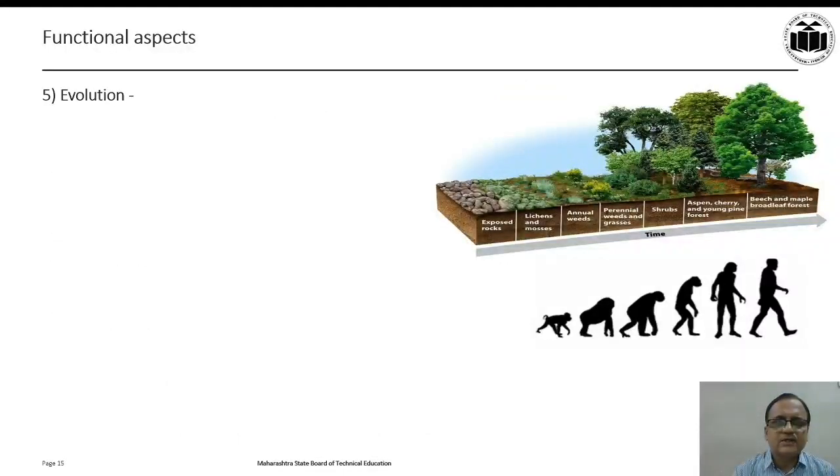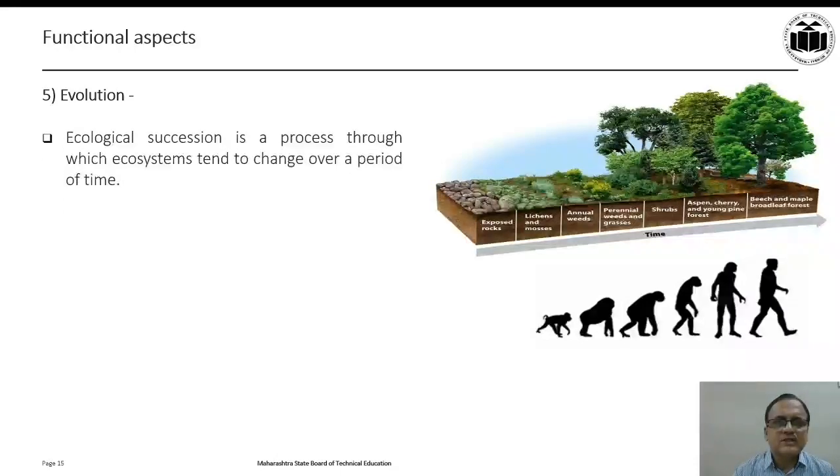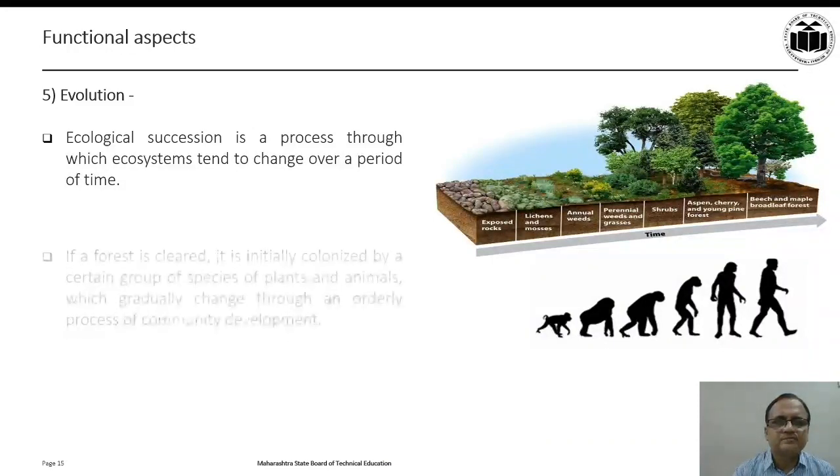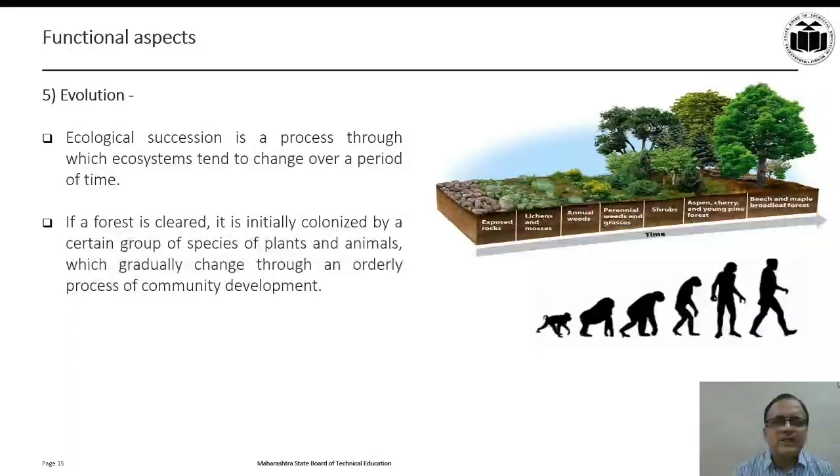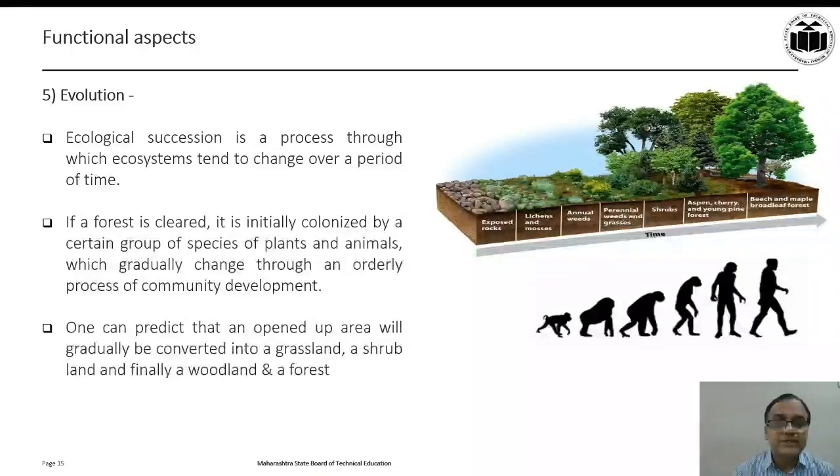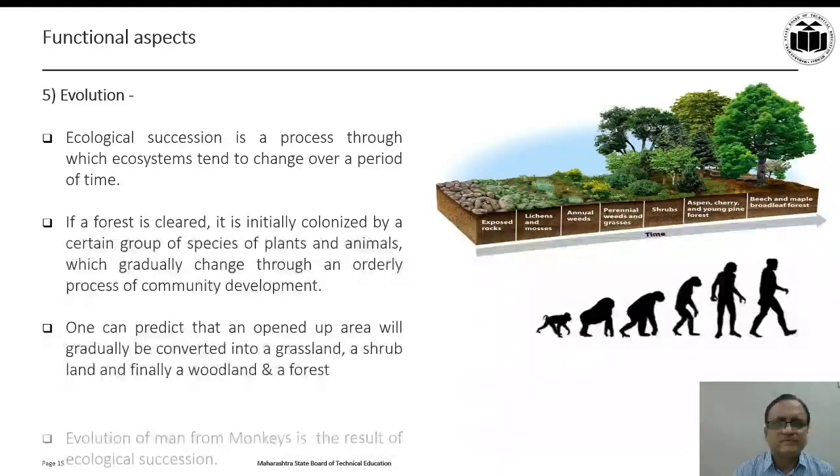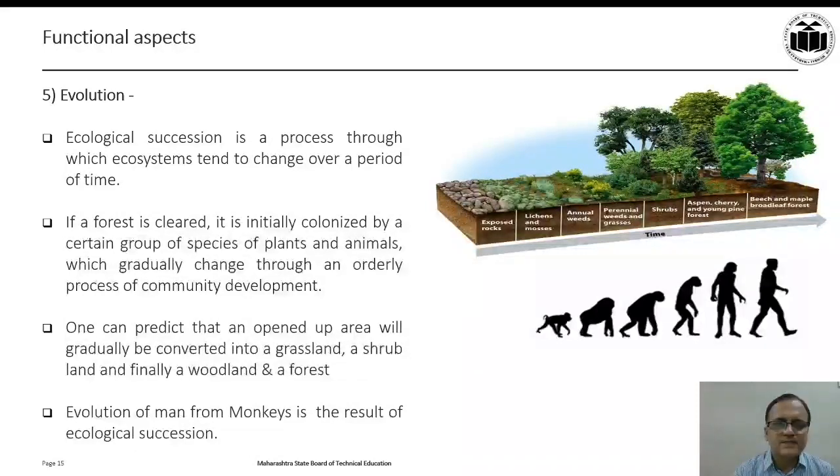The fifth functional aspect is regarding evolution. Ecological succession is a process through which ecosystems tend to change over a period of time. If a forest is cleared, it is initially colonized by a certain group of species of plants and animals which gradually change through an orderly process of community development. One can predict that an open area will gradually be converted into a grassland, from grassland to a shrubland and finally to a woodland and into a forest. The evolution of man from monkeys is a well known example of ecological succession.